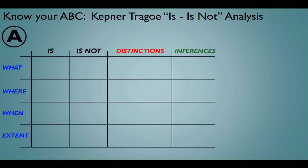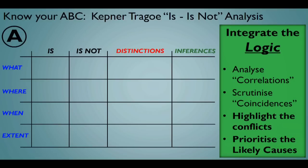This tool integrates the logic of the problem. It analyzes correlations, scrutinizes coincidences, highlights conflicts in the logic, and prioritizes likely causes. In the nutritional and medical world, epidemiological studies would line up with this tool, but this is a very structured way to do it. This tool will end up with hundreds of entries — all must be scrutinized because you may miss something otherwise.